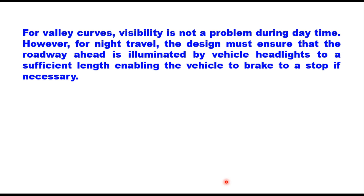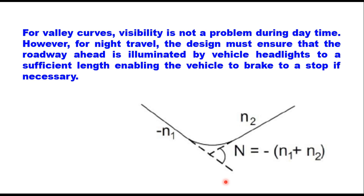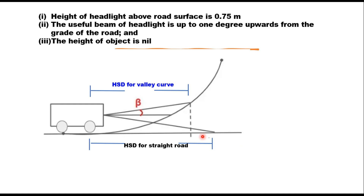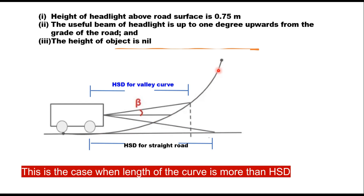For valley curves, visibility is not a problem particularly during daytime. However, for night travel the design must ensure that the roadway ahead is illuminated by vehicle headlights to a sufficient length, enabling the vehicle to brake to a stop if necessary. In the case of a valley curve, the height of the headlight above the road surface is taken as 0.75 meter. The useful beam of the headlight is up to 1 degree upward from the grade of the road. On a straight road the headlight beam covers a certain sight distance, but on a valley curve going upward, the beam is taken at an angle of 1 degree from the horizontal, which increases the headlight sight distance.